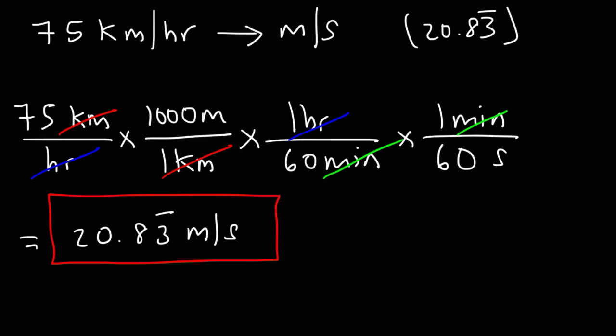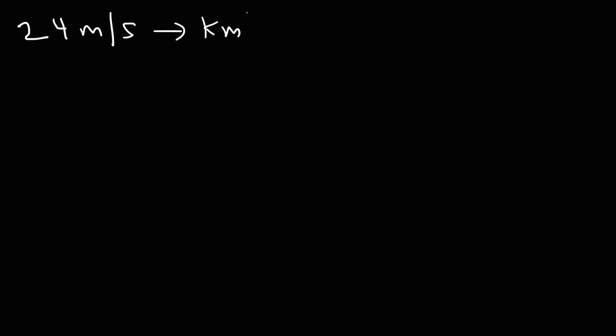Now what about the reverse — how do we go from meters per second to kilometers per hour? Let's convert 24 meters per second into kilometers per hour. The shortcut is to multiply by 3.6: 24 times 3.6 gives 86.4. But now let's show the work, starting with 24 meters per second.